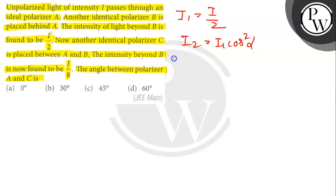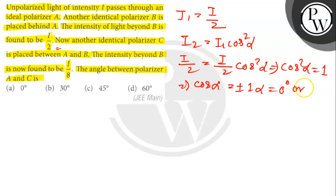Given that I2 is I by 2, so I2 equals I by 2 cos square alpha, which means cos square alpha is 1. So cos alpha is plus or minus 1, which is 0 degree or 180 degree. Hence, polarizer B is parallel or anti-parallel to A.